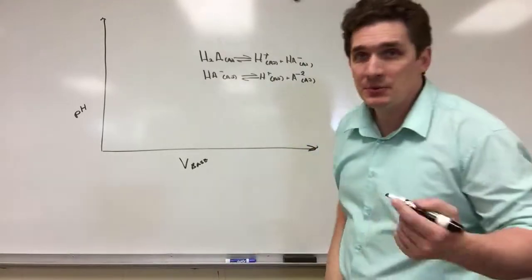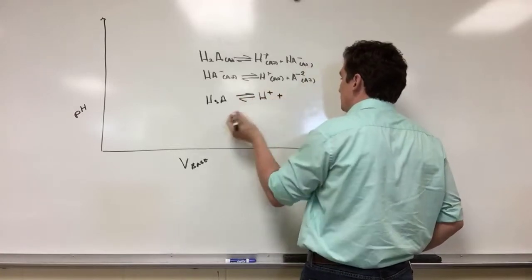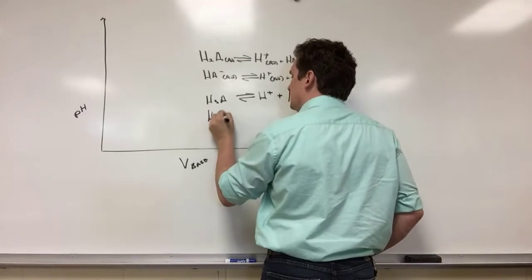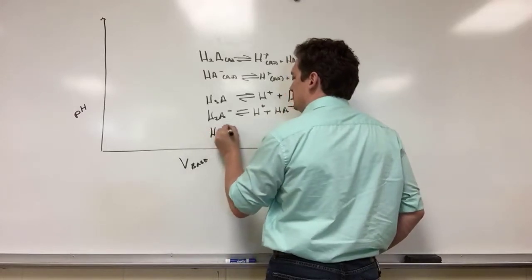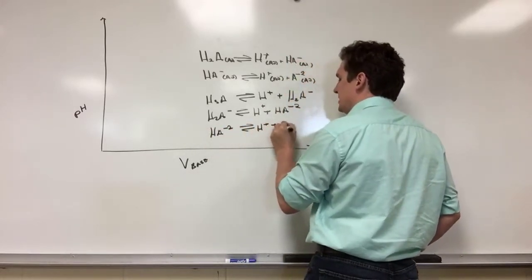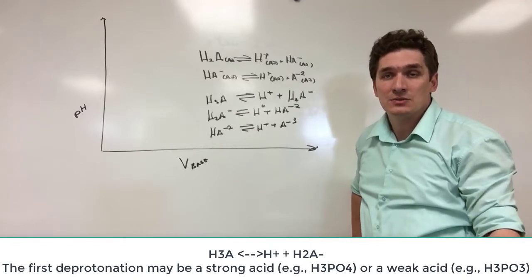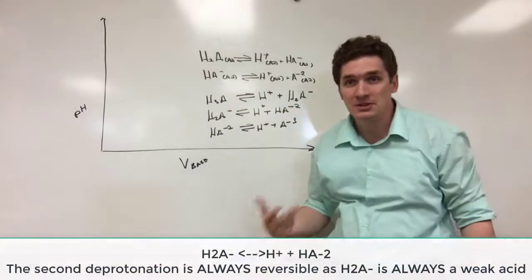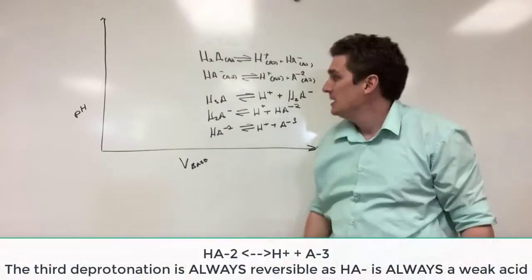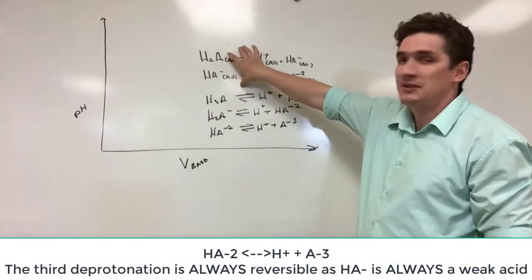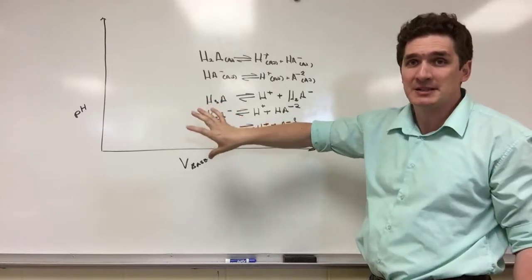For triprotic acids, same idea — we have three acidic protons. So we have H3A going to H2A⁻, H2A⁻ going back and forth to H⁺ and HA²⁻, and HA²⁻ going back and forth to H⁺ and A³⁻. Like with diprotic acids, the first step may be strong — some people classify phosphoric acid H3PO4 as a strong acid — so the first deprotonation may be irreversible, but the second, and most definitely the third, both constitute weak acid behavior. Examples where both are reversible: H2SO3, sulfurous acid. Examples where all three are reversible: H3PO3, phosphorous acid.